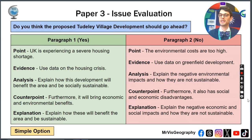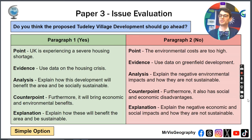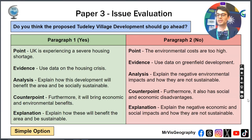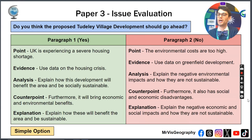In paragraph 2, you'd say the environmental costs are too high. Give some data on the greenfield issue, explain how it's unsustainable, and give social and economic disadvantages, explaining how they are negative.